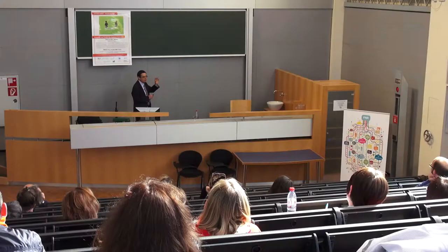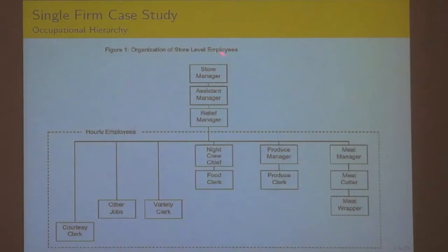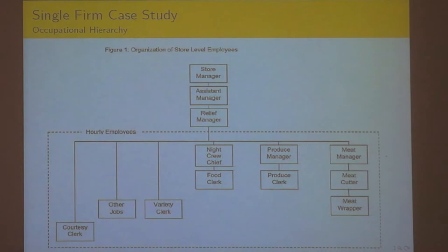The company doesn't hire managers from the outside — they promote — but only men. In the meat department, meat manager and meat cutters are male jobs that pay well. The meat wrapper is a female job that pays low, with no chance for women to move up, at least until the lawsuit. Produce manager: all male, no females. So it goes on like that.